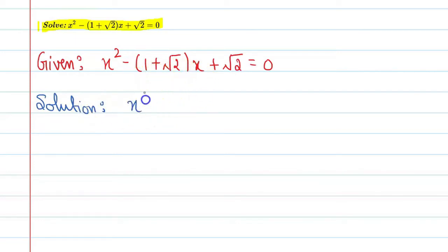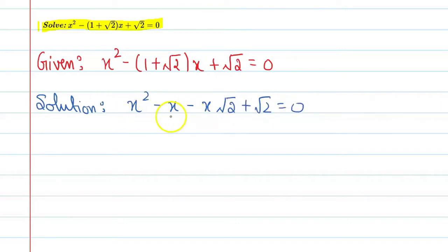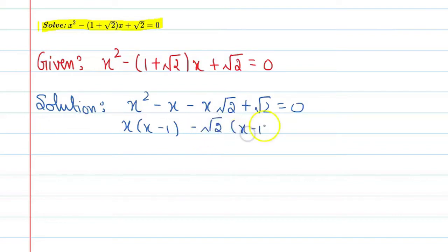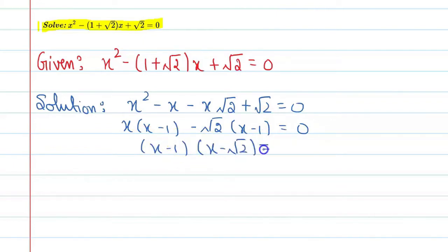We can solve this problem: x squared minus x minus x root 2 plus root 2 equal to 0. Taking x common gives x times (x minus 1), and taking minus root 2 common gives minus root 2 times (x minus 1), equal to 0. So this factors as (x minus 1)(x minus root 2) equal to 0.